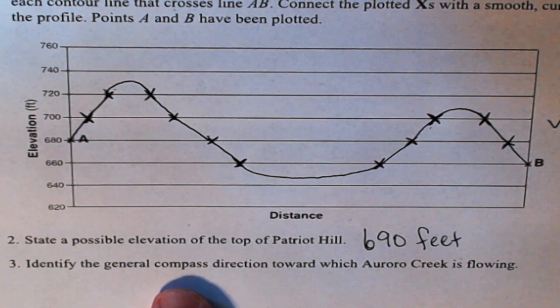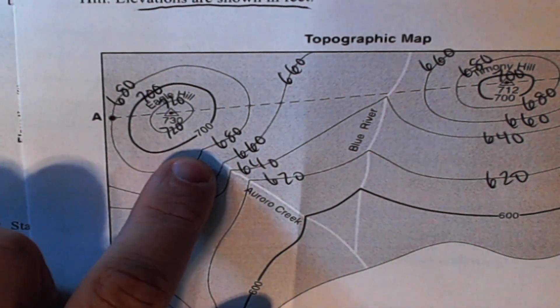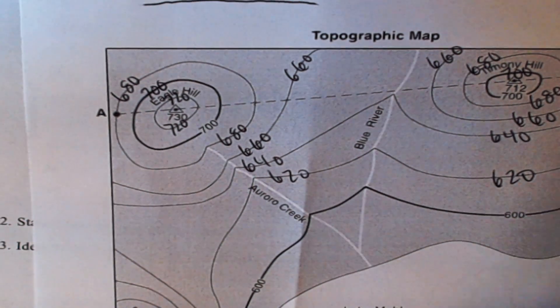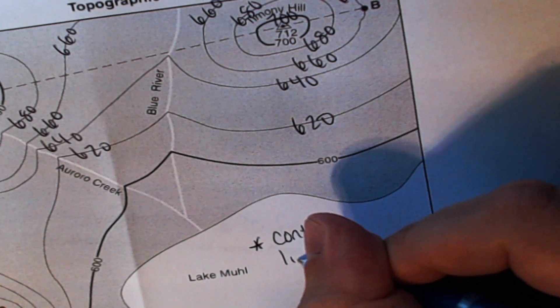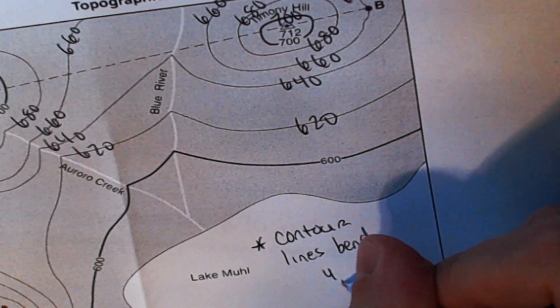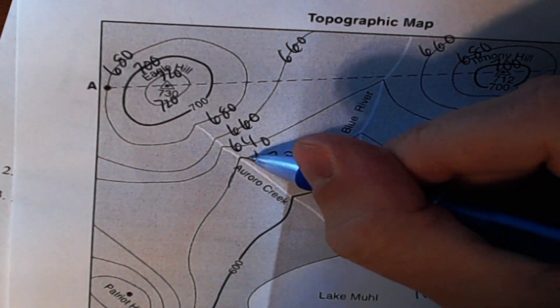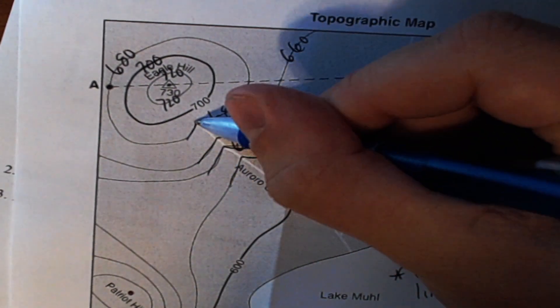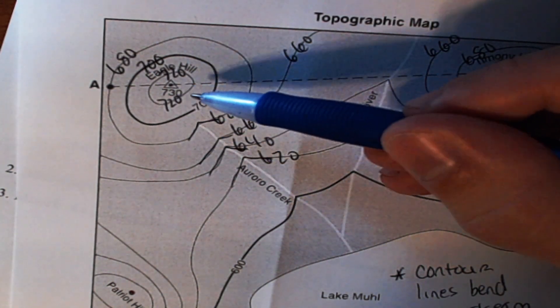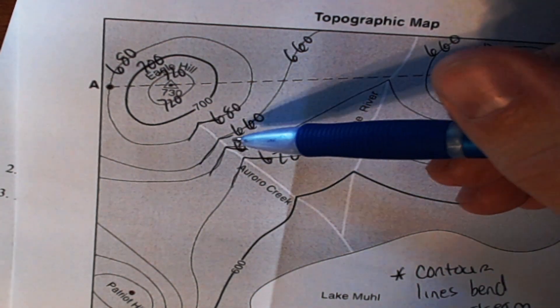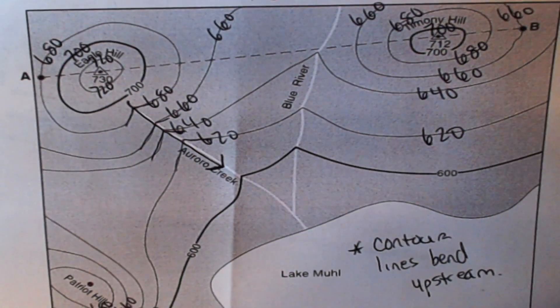Number three, identify the general direction towards which Aurora Creek is flowing. So we're going to go here. Based on the contour lines, we could figure out the direction that Aurora Creek is flowing. And all you got to do is remember this: contour lines bend upstream. That's the explanation. So if you look at these lines here, this line here, the ones that go over the creek, they bend, as in the little pointy spot at the top points upstream, aka where the water came from. So if they ask you what direction it's flowing, this river would be flowing this way. So that direction is southeast.